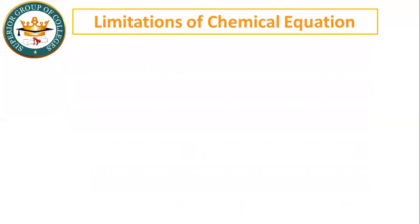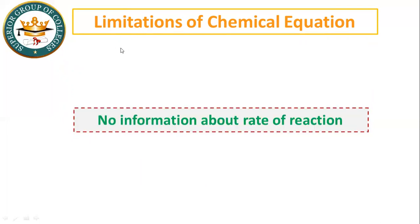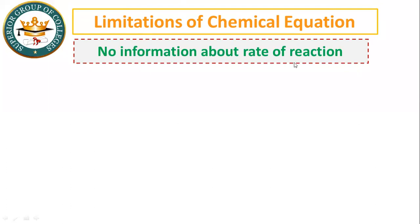The last topic is the limitations of chemical equations. We can write a balanced chemical equation, but the first limitation is: no information about the rate of reaction. From a balanced chemical equation, you cannot tell the speed or velocity of the reaction.